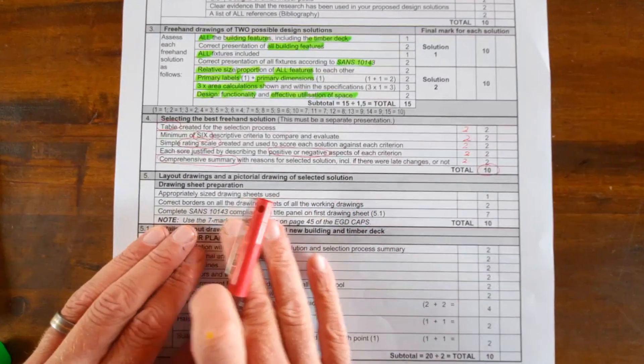Please remember, your civil title panel must conform to these requirements specifically on your first working drawing, which will be your floor plan. The other drawings can have just a border with your name, surname, page number, the title of the drawing, and the date. That's the only requirements for the following working drawings: elevations, sectional elevation, two-point perspectives, and even the site plan. But for your floor plan, you must adhere to a full civil title panel according to SABS.